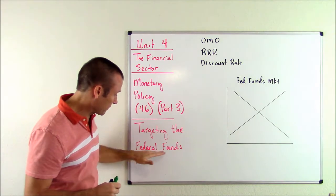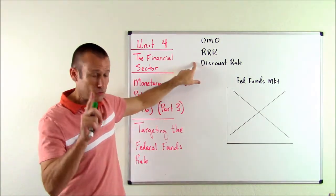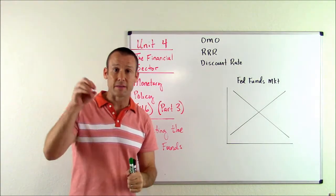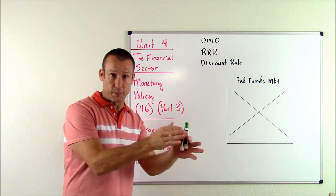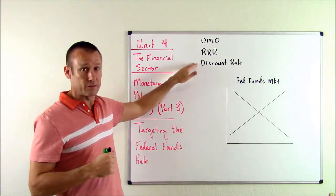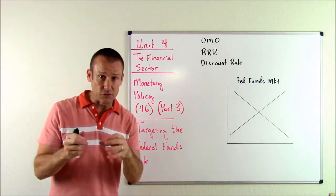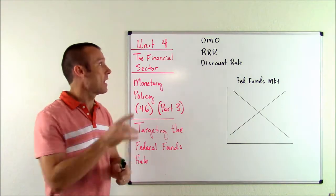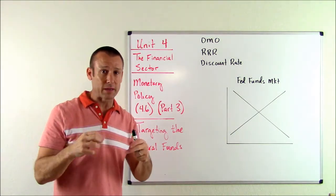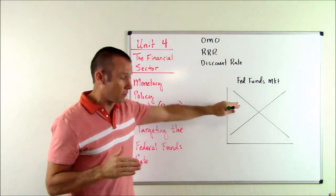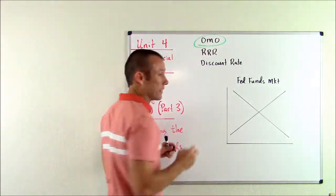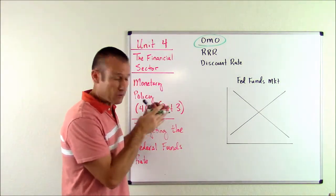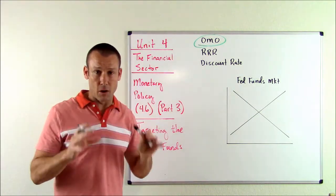The discount rate is a tool; the federal funds rate is something they target. The discount rate, if you're ever asked to define it, is the interest rate the Fed charges banks. Since the Fed gets to set this, it is a tool. The federal funds rate is an interest rate that banks charge each other to borrow and lend reserves. AP Macroeconomics wants you to know which tool does the Fed use when really trying to manipulate the federal funds market — the answer is open market operations.